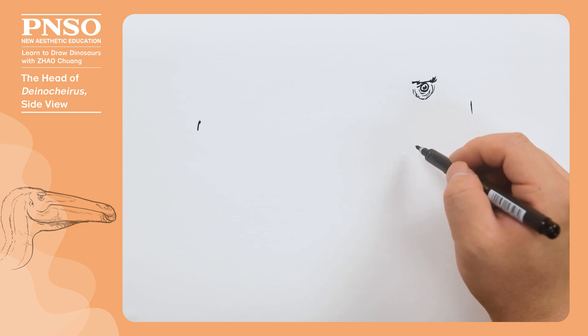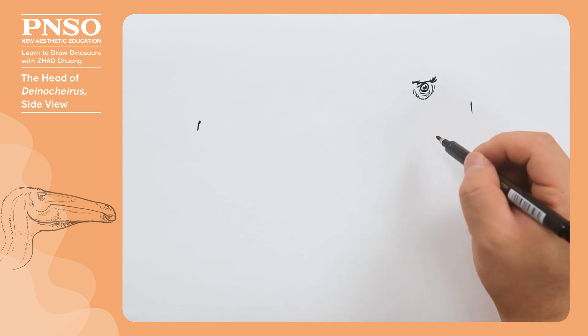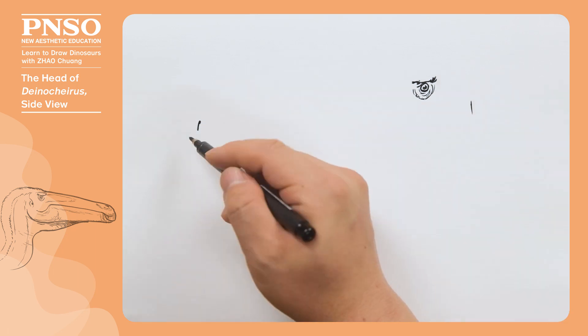It had softer lids around its eyes. Next, we draw its mouth. Before drawing, we need to know that when its mouth was closed, the shape of this seam was complicated.